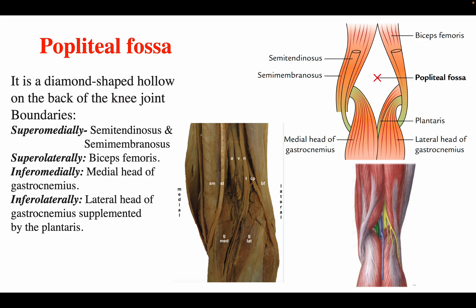The boundaries are: superomedially — semitendinosus and semimembranosus; superolaterally — biceps femoris muscle; inferomedially — medial head of gastrocnemius; and inferolaterally — lateral head of gastrocnemius as well as plantaris muscle. In the diagram you can see semitendinosus and semimembranosus forming the superomedial boundary, and biceps femoris forming the superolateral boundary.